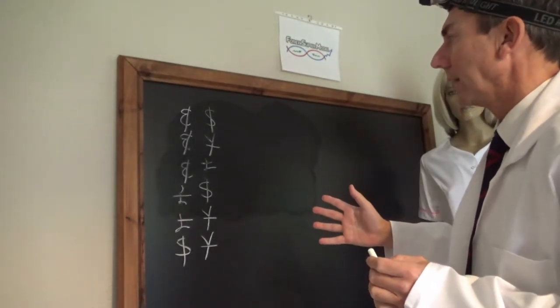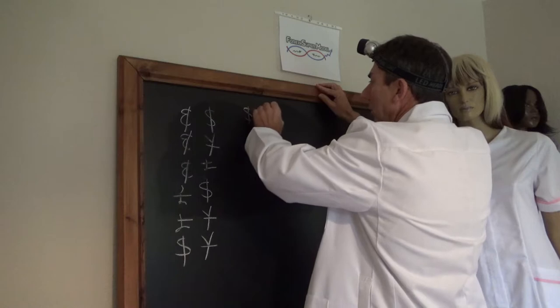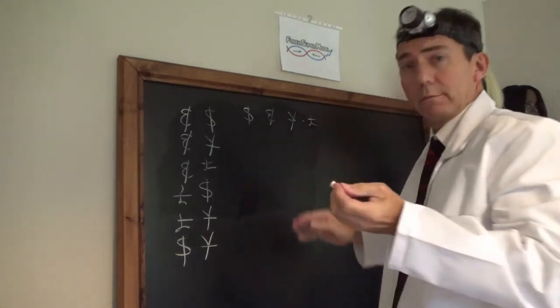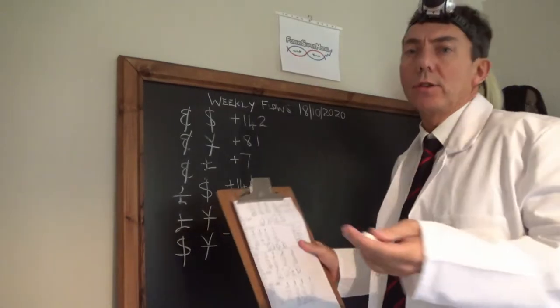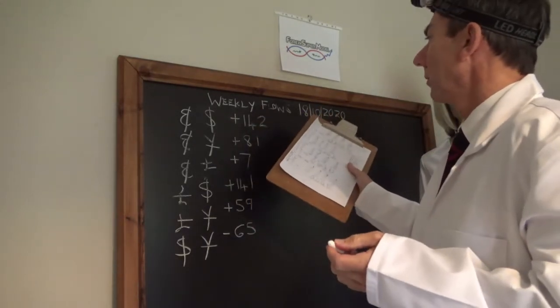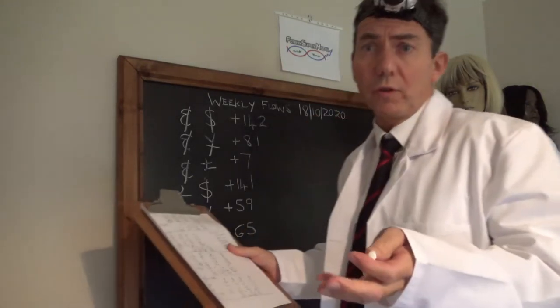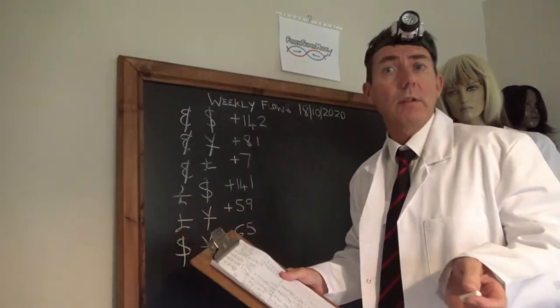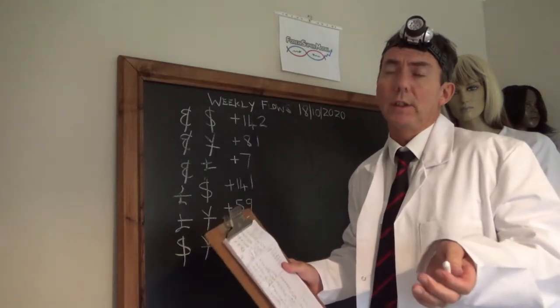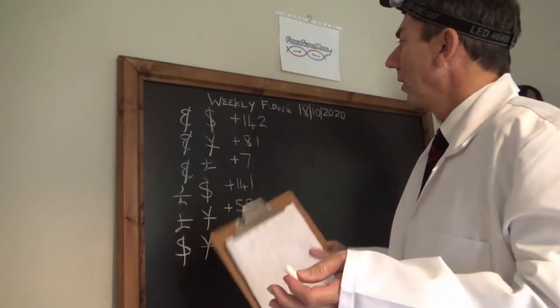Now, moving on from that, what we need to know for each complex - remember there's four: dollar, euro, yen, pound - is how these interact. I've used the weekly flows from the 18th of October 2020. You can use flows from any given time period: an hour, a day, four hours, whatever you want. The procedure is the same. But I've used these because they were convenient.